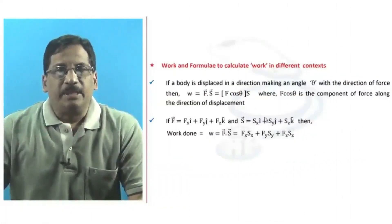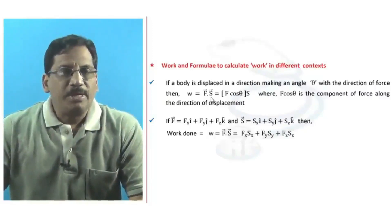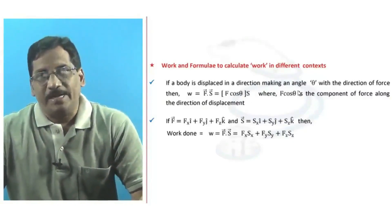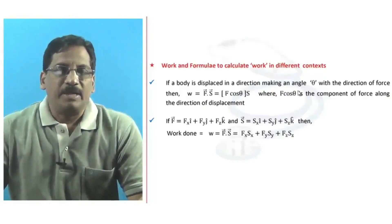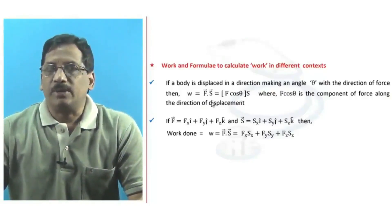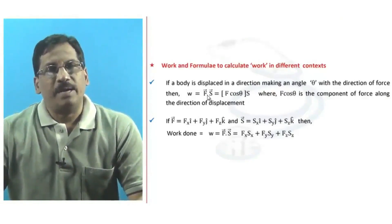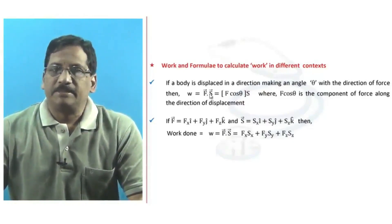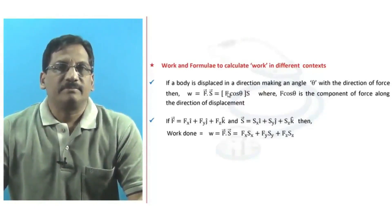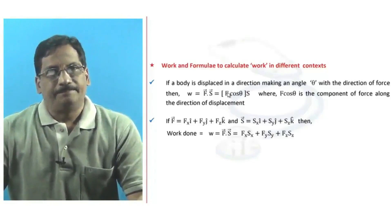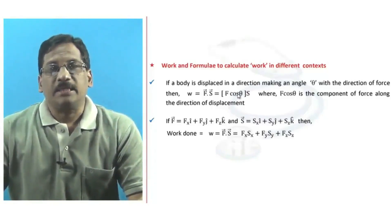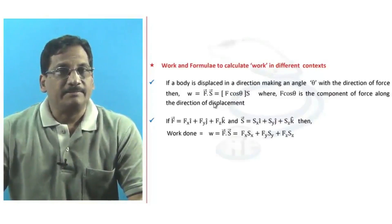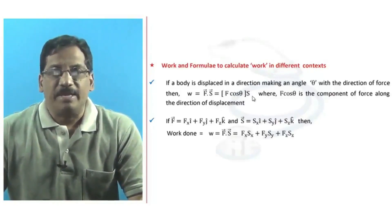Let us define the concept of work. If a body is displaced in a direction making an angle theta with the direction of the applied force, then work is said to be done such that W equals the dot product of the force vector and the displacement vector. This can be more elaborately given as F cos theta into S, where F cos theta is the component of the force along the direction of displacement.